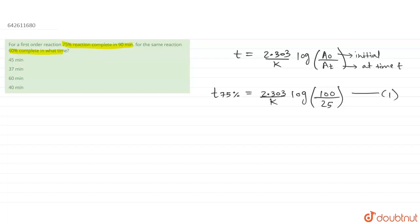Now similarly for t₆₀%, the scenario is 2.303 divided by k, log of initial 100, divided by 60% has been complete, that means 40% has been left. So at time t it will be 40. This is your equation number 2.